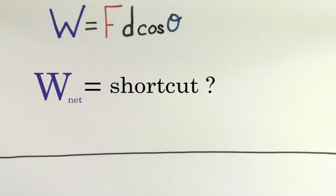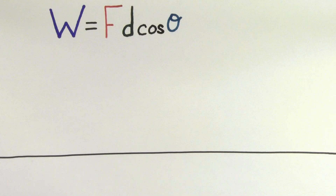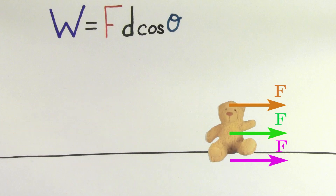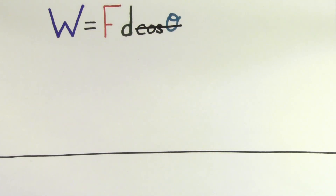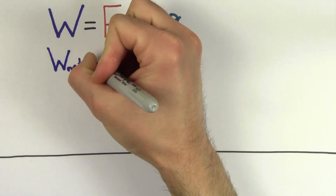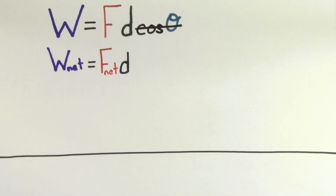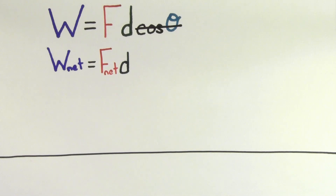There's actually a trick to figuring out the net work done on an object. To keep things simple, let's assume that all the forces already lie along the direction of the displacement — that way we can get rid of the cosine theta term. Since we're talking about the net work done on an object, I'm going to replace F with the net force on that object. Now we know that the net force is always equal to the mass times the acceleration, so we can replace F-net with M times A. So we find that the net work is equal to the mass times the acceleration times the displacement.